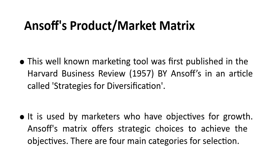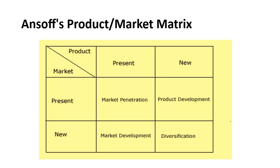Based on these factors, there are four main categories for strategy selection based on product and market. With the help of a simple diagram, you can easily understand the four different situations and what strategy applies in each one.